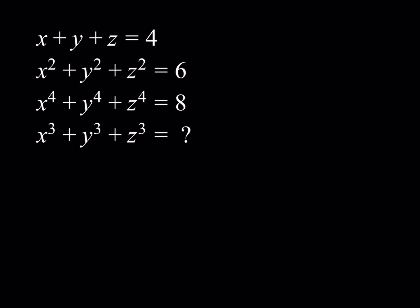So we have x plus y plus z equals 4, x squared plus y squared plus z squared equals 6, x to the fourth plus y to the fourth plus z to the fourth equals 8, and we're supposed to find the sum of the cubes. We have three equations and three unknowns so it should be solvable. This is a very interesting problem and its solution uses a lot of good ideas so I think this would be a good problem to look at.